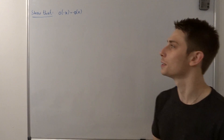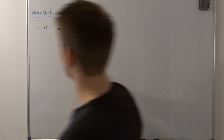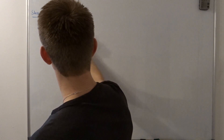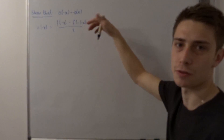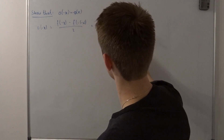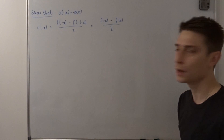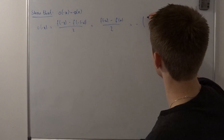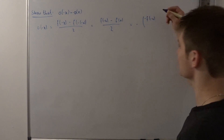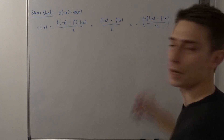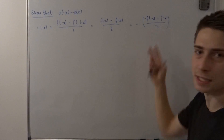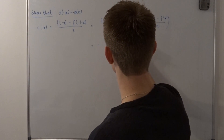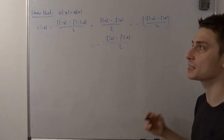Let's plug this in. So o of minus x is nothing else than f of minus x minus f of minus minus x over 2. We can distribute the minus into minus x and get positive x. So that's f of minus x minus f of x over 2. Now we can factor out a minus 1. That's minus f of minus x plus f of x over 2. We can interchange the terms since we're in the field of real or complex numbers. So that becomes minus f of x minus f of minus x over 2, which is indeed minus o of x.